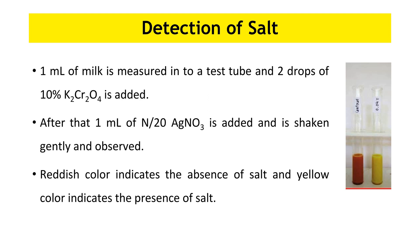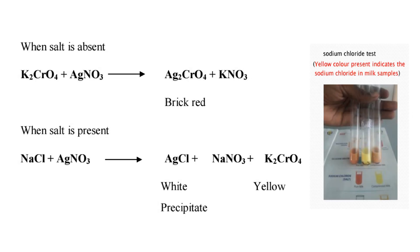First, let's see how to detect salt in milk. You need to get 1 ml of milk into a test tube and add 2 drops of potassium dichromate. Then 1 ml of selenite is added and is shaken gently and observed. Reddish color indicates the absence of salt and yellow color indicates the presence of salt. Here you can see the chemical reactions that happen in the test.